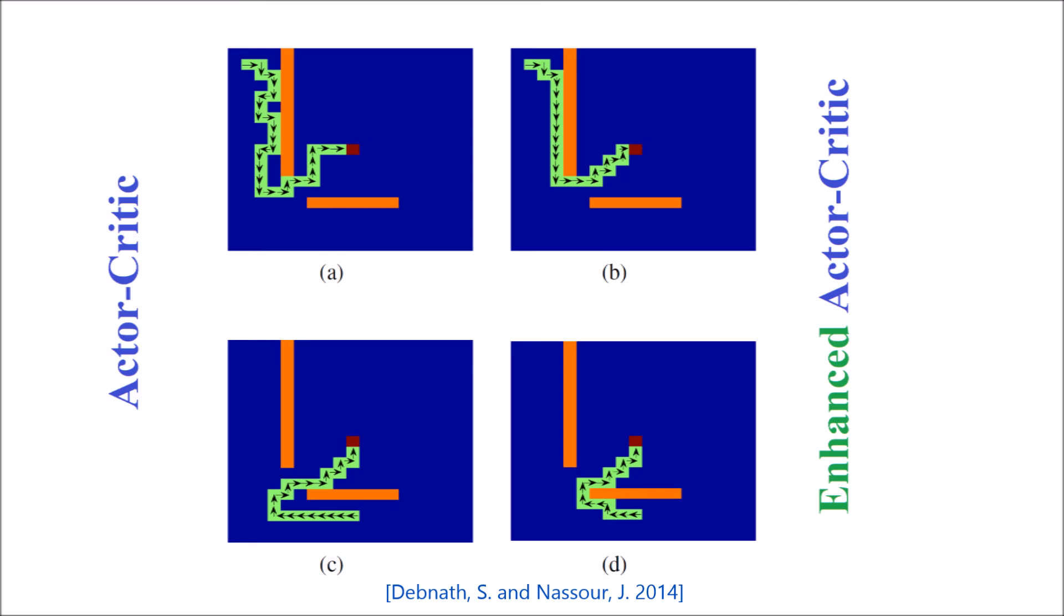Here we show paths taken by the agent using the actor-critic and the enhanced actor-critic method. The arrows show the action taken by the agent on each state. In A and C we show instances of the agent trying to reach the goal using the actor-critic method, whereas B and D show instances of the agent trying to reach the goal using the enhanced actor-critic method. In both scenarios, the enhanced actor-critic method leads to a more optimized policy in reaching the goal compared with the actor-critic.